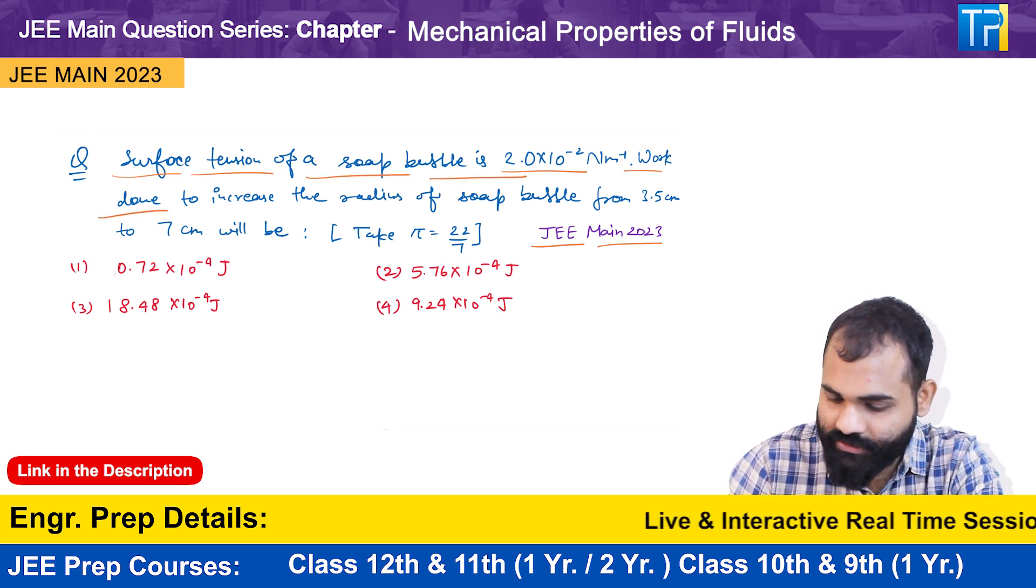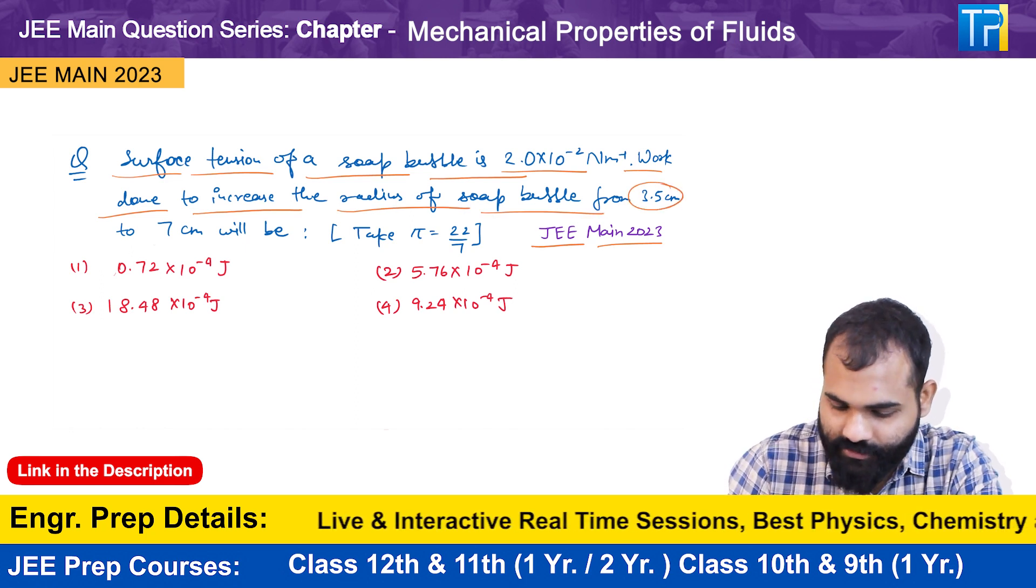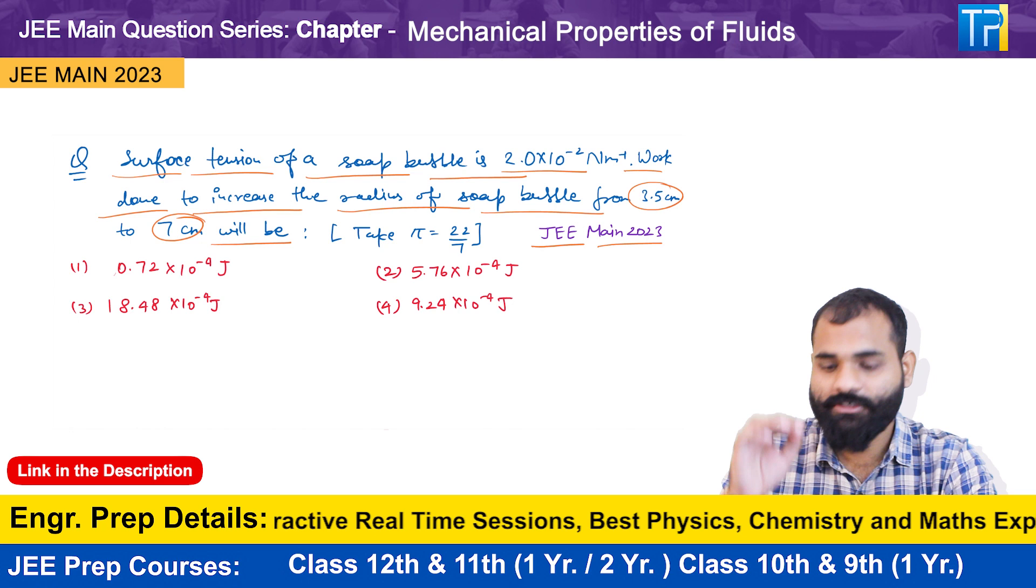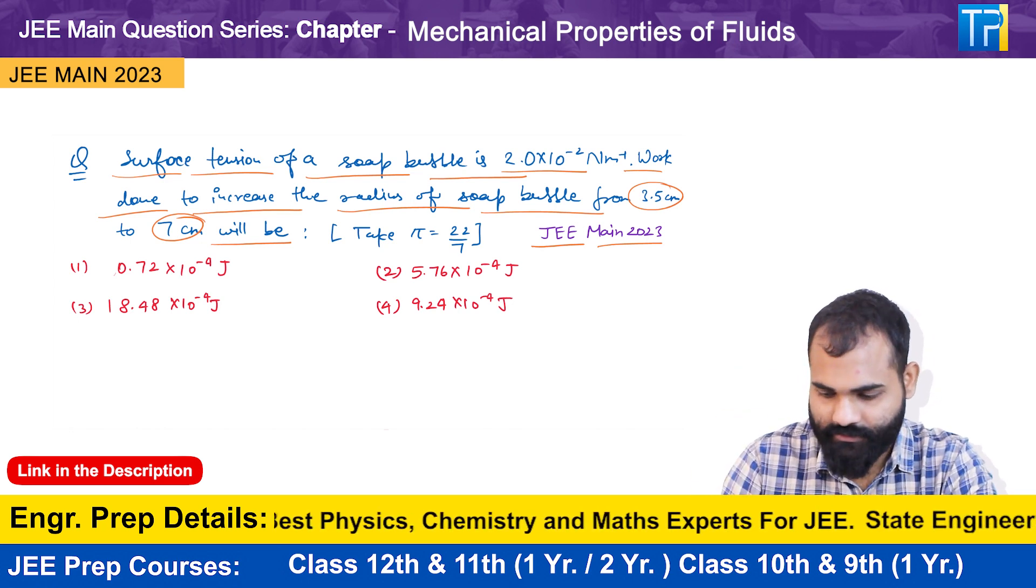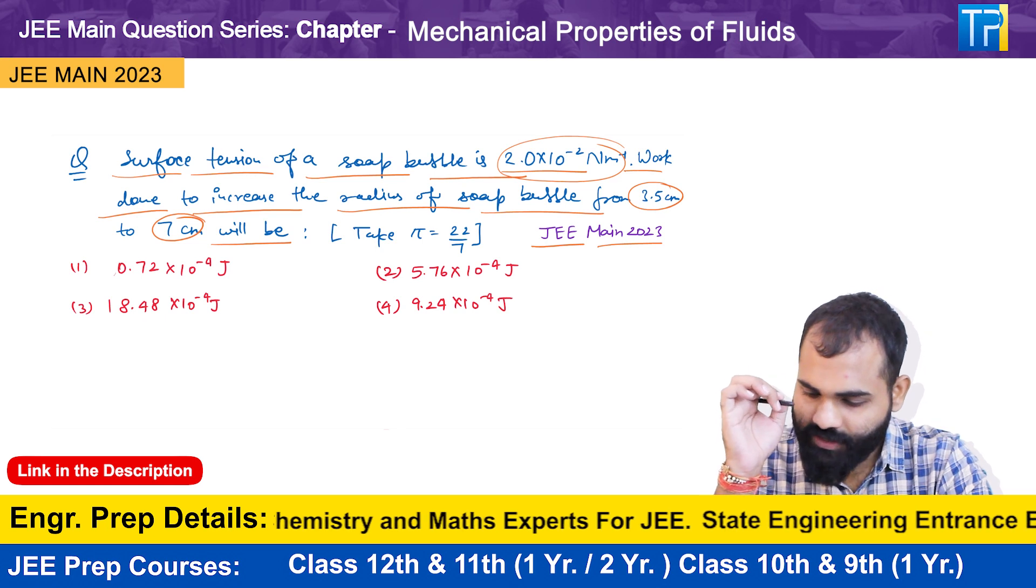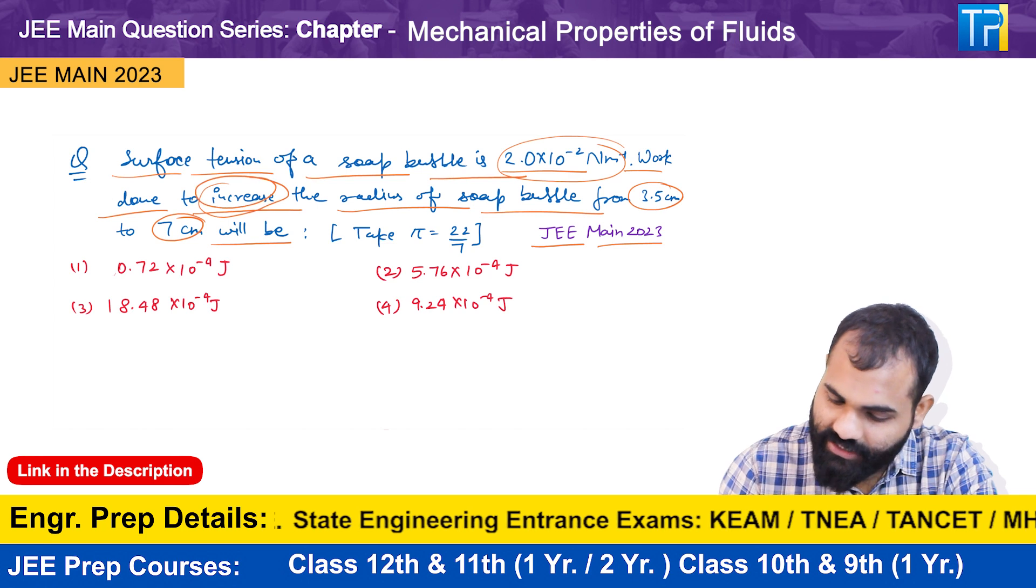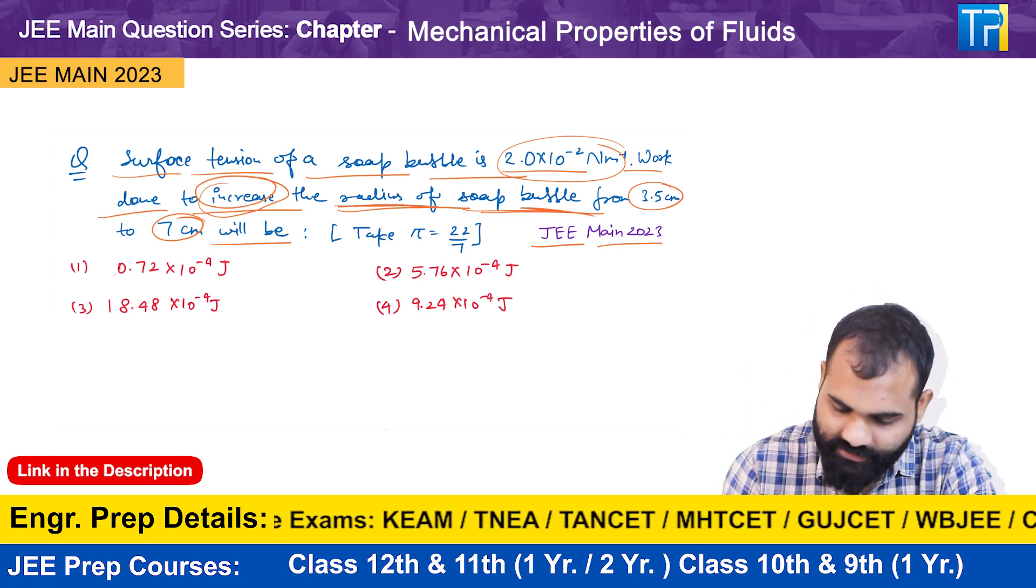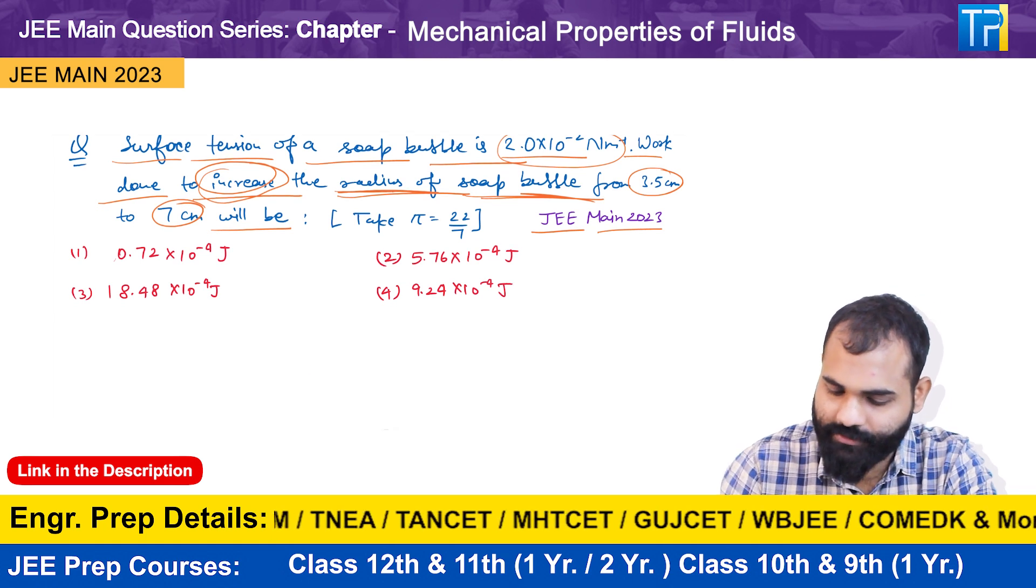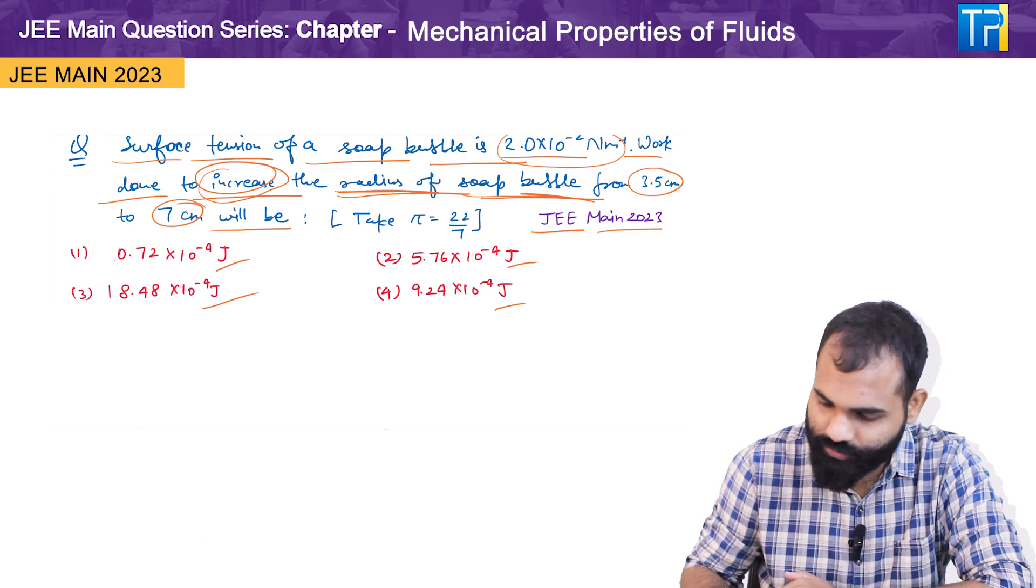Work done to increase the radius of soap bubble from 3.5 centimeter to 7 centimeter will be. So basically the surface tension of a bubble is given and we have to find the work done to increase the radius of soap bubble from 3.5 centimeter to 7 centimeter. Options are given here, so first let us understand the question.